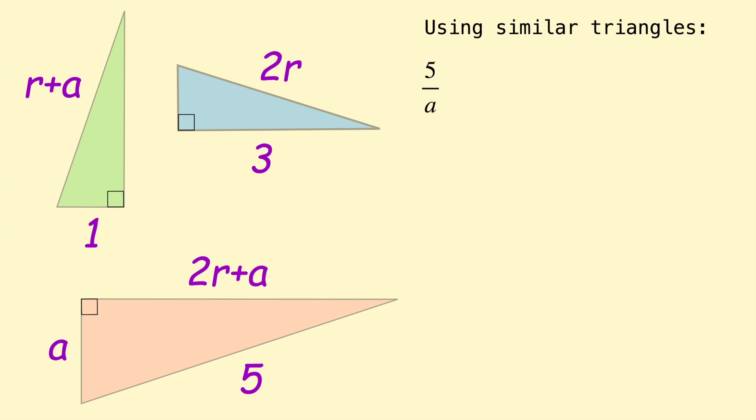So using similar triangles we can compare the ratios of the sides of those triangles. So the ratio of the hypotenuse to the short leg on this triangle, 5 to A, will equal the same ratio on the green right triangle. So 5 on A is equal to R plus A to 1. This equation allows us to write R in terms of A. So rearranging, we can say R equals 5 on A minus A, and we can also write that as 5 minus A squared on A.